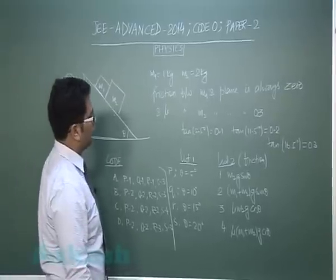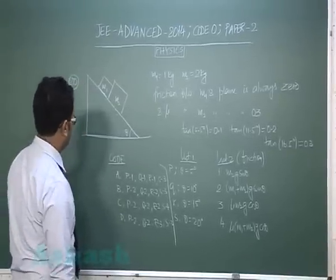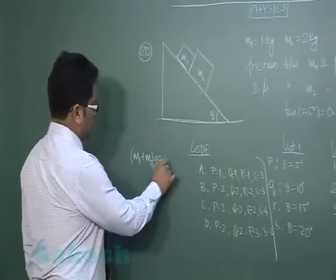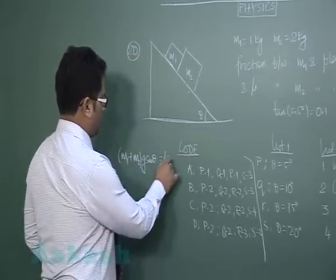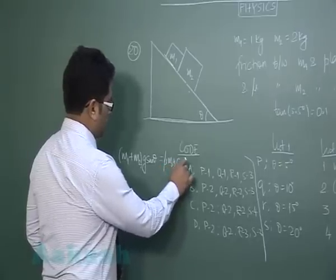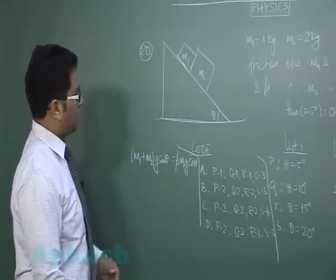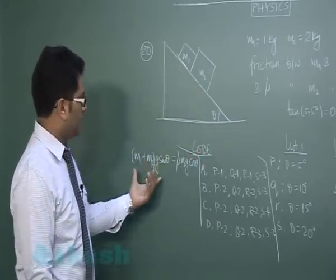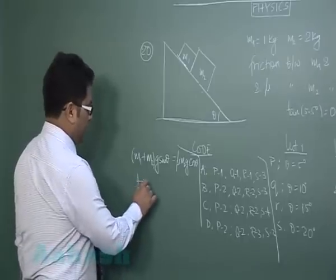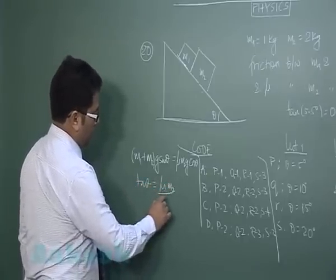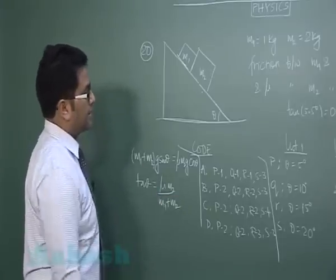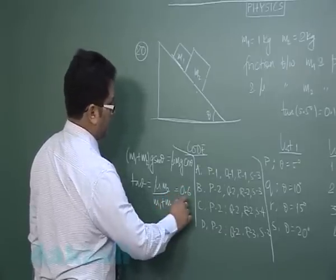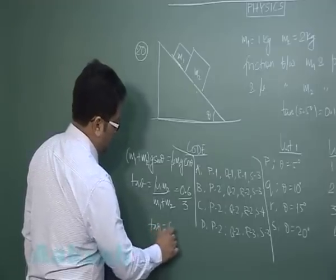First, let's try to see when the body begins to move. In that situation, M1 plus M2 times g sin theta is the downward force, which equals mu M2 g cos theta. This is the situation when the system begins to move because there is friction. Tan theta equals mu M2 by M1 plus M2. Let's put the value: mu being 0.3, so the numerator becomes 0.6 and this becomes 3, and tan theta becomes 0.2. Theta from the given constant you could say is 11.5 degrees.